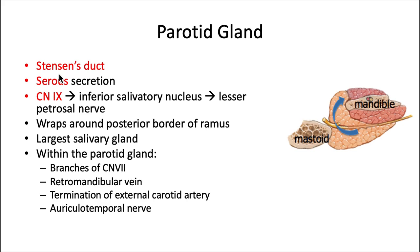The parotid gland mostly produces serous secretion. It's powered by cranial nerve 9, the glossopharyngeal nerve. Those nerve fibers originate from the inferior salivatory nucleus and travel mostly via the lesser petrosal nerve. We'll unpack this pathway a little later in the video.